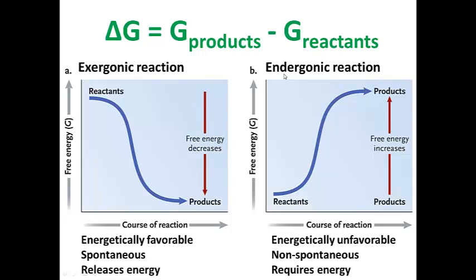An endergonic reaction is just the opposite. In an endergonic reaction the free energy of the reactants is less than that of the products — we can think of the reaction as moving uphill. The free energy increases, and because the free energy of the products is greater than the free energy of the reactants, delta G is positive. Because delta G is positive, the reaction is energetically unfavorable, it will not occur spontaneously, and for that reaction to occur it requires an input of energy. You should be able to differentiate between exergonic and endergonic reactions and calculate the change in free energy delta G of a reaction in two different ways. And that's the end of this video.